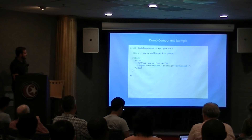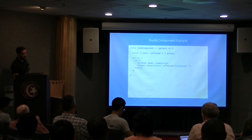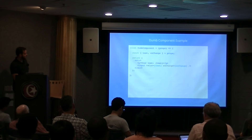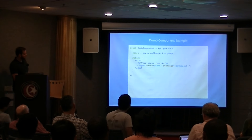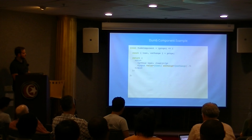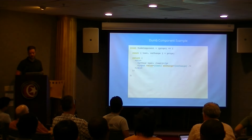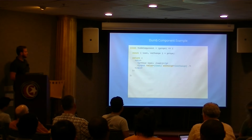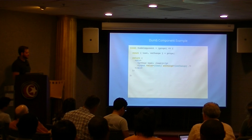Here's an example of a dumb component. You've got your text being passed in via props and an onChangeHandler being passed in. All it does is render a div with a paragraph displaying the text, and an input that sets its value to text with the onChangeHandler for onChange. There's no mutation occurring here — it's just rendering the data passed to it.